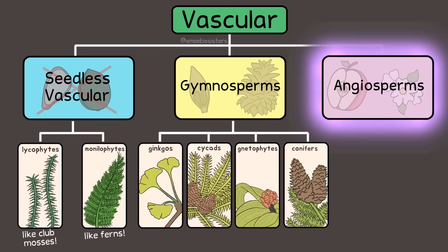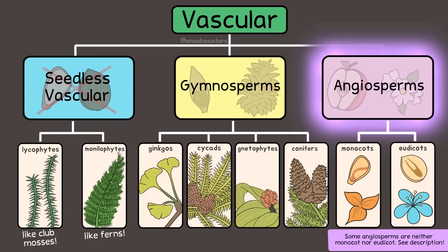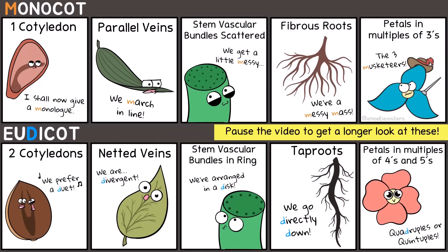The third category: angiosperms. These are the flowering plants — they have flowers and they have fruit, though not necessarily an edible fruit. This is a huge group; it's estimated around 90% of all plants are angiosperms. Within the angiosperm group, many angiosperms — but not all — can be categorized as a monocot or eudicot. You'll see some of the characteristics of these two groups in our illustrations, but just know there are some exceptions. Overall, the angiosperm group is the largest, most diverse group of plants.